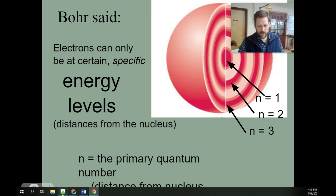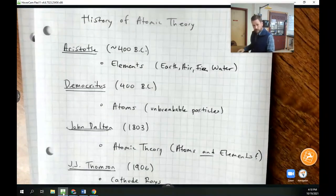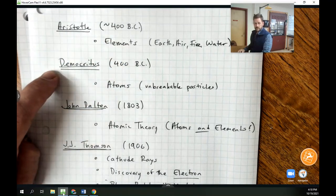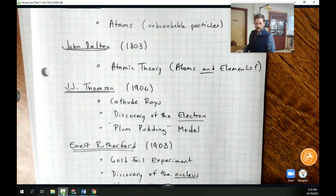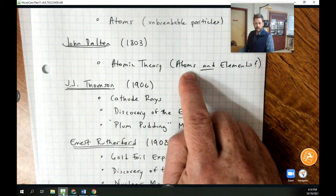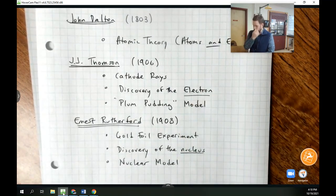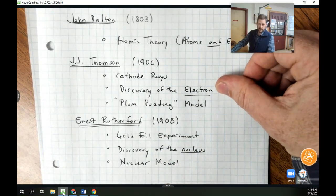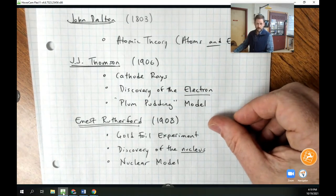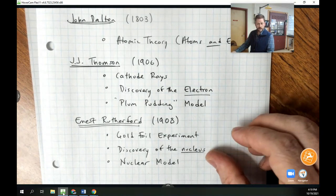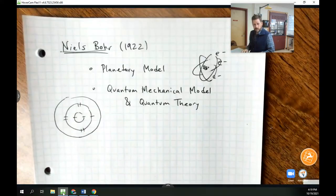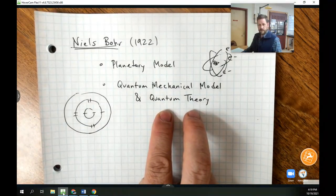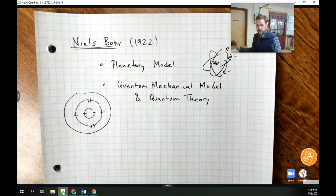So to summarize, we have these names which we should be familiar with regarding the history of atomic structure. Aristotle, whose name is associated with elements, and Democritus, whose name is associated with the idea of atoms. Dalton's atomic theory, which married the idea of both atoms and elements. And then the more modern scientist, J.J. Thompson, experiments with cathode rays, the discovery of the electron and the plum pudding model. Ernest Rutherford, the gold foil experiment, the discovery of the nucleus, and the nuclear model. And then finally, we have Niels Bohr, who suggests the planetary model and then later revises the planetary model to incorporate the ideas of quantum mechanics or quantized electron energy.